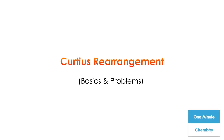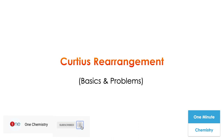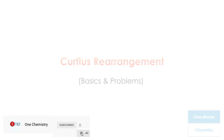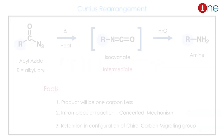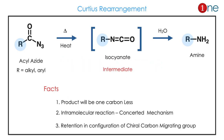Welcome to One Chemistry, this is the One Minute Chemistry series. We're going to quickly see what is Curtius rearrangement — we will see some basics and problems. Curtius rearrangement is a conversion of an azide into an amine through the intermediate isocyanate.